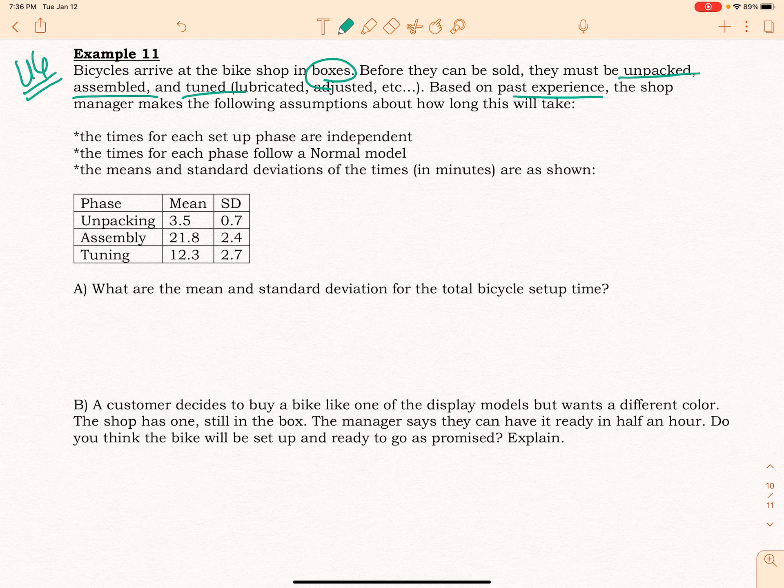He has found that on average, the unpacking process takes 3.5 minutes with a standard deviation of 0.7. The assembly process takes 21.8 minutes on average with a standard deviation of 2.4. And tuning the bike takes an average of 12.3 minutes with a standard deviation of 2.7. Notice that the times for each setup phase are independent, and the times for each phase follow a normal model.